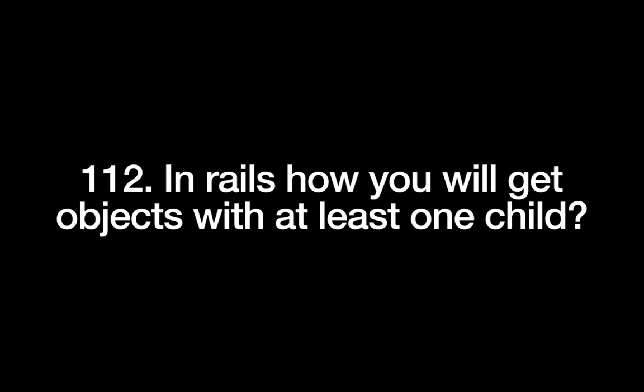In Rails, how do you get objects with at least one child? This question may be asked when you have two models with a belongs_to and has_many association and you want to find the parent instance that has at least one child model instance. Practice implementing that query.